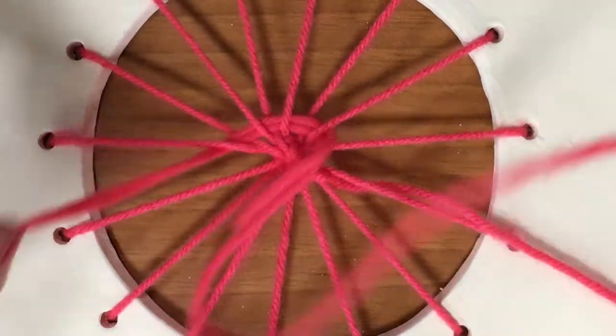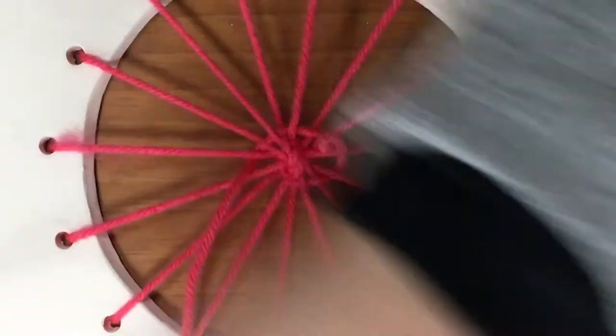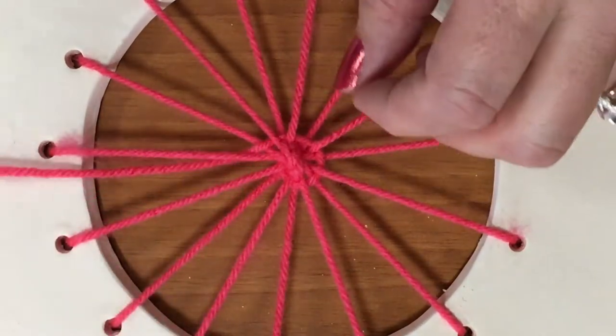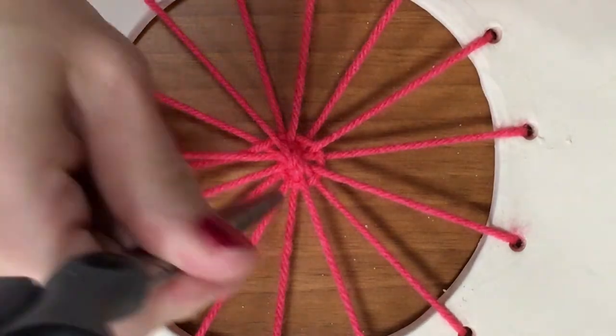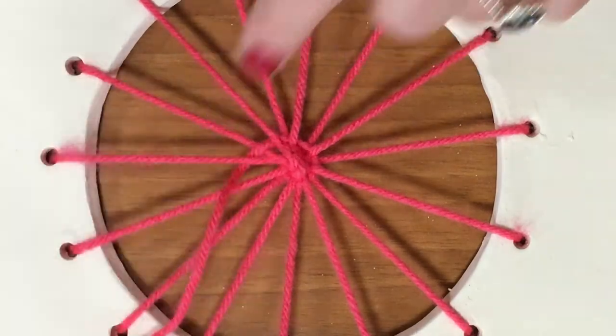every single row that you go around, this, what we're doing right now, this is called the weft string, or the weft yarn. Your weft will be opposite each time.